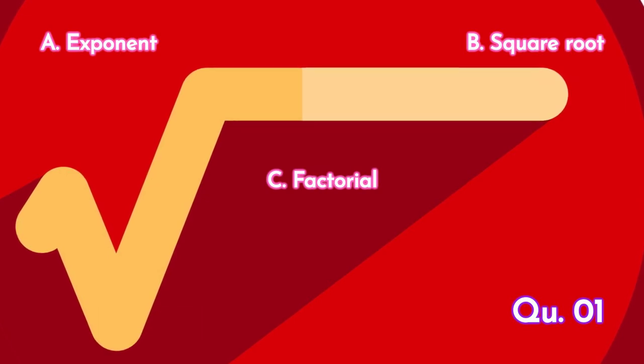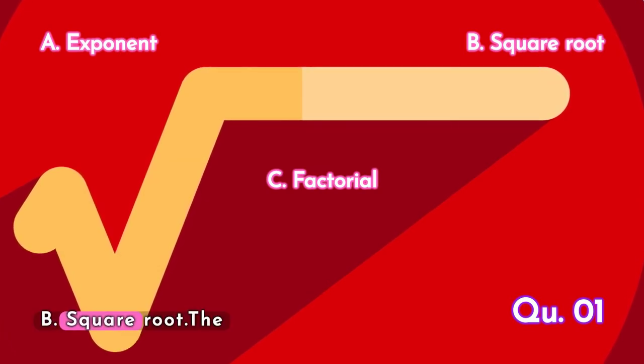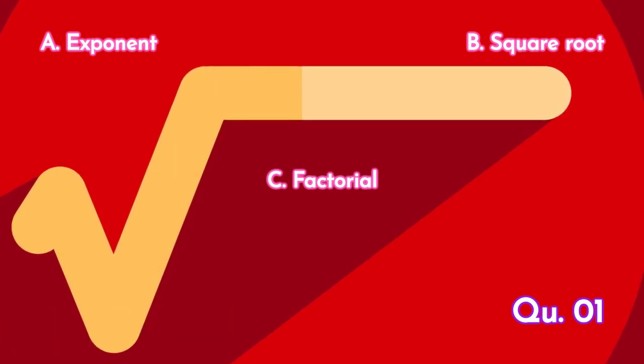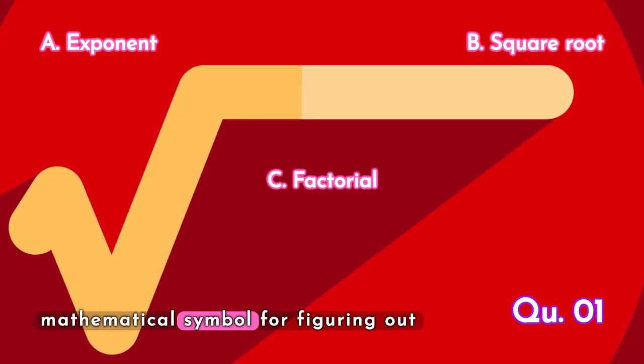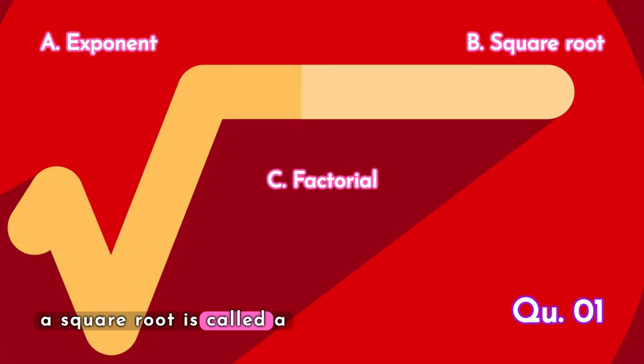The answer is B. Square root. The mathematical symbol for figuring out a square root is called a radical sign.